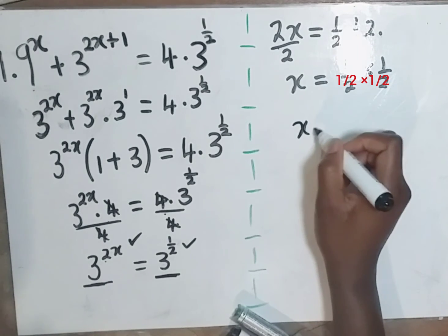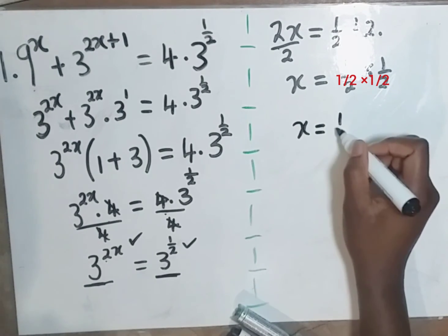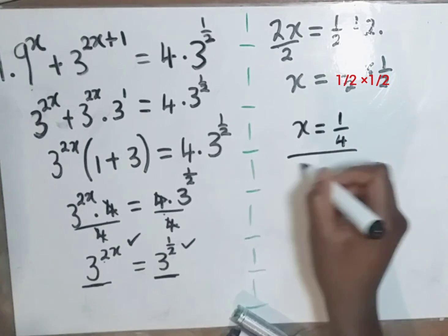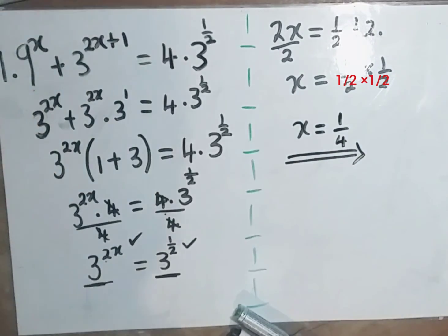Now our value for x is equal to 1 over 4. Our value for x is equal to a 4.